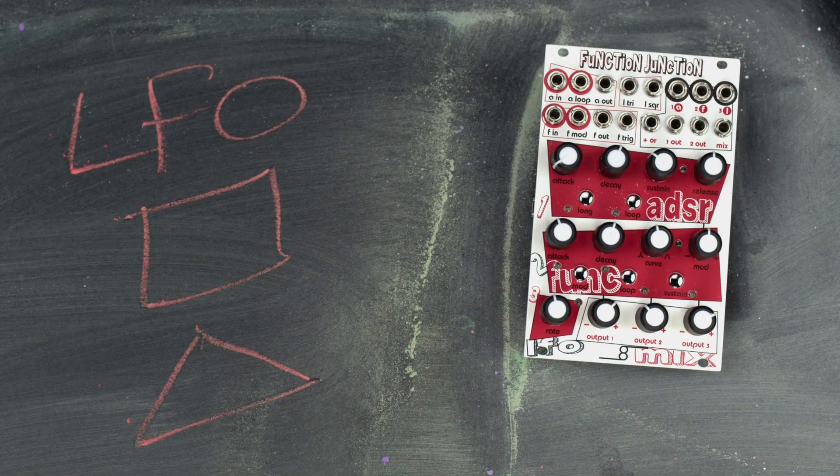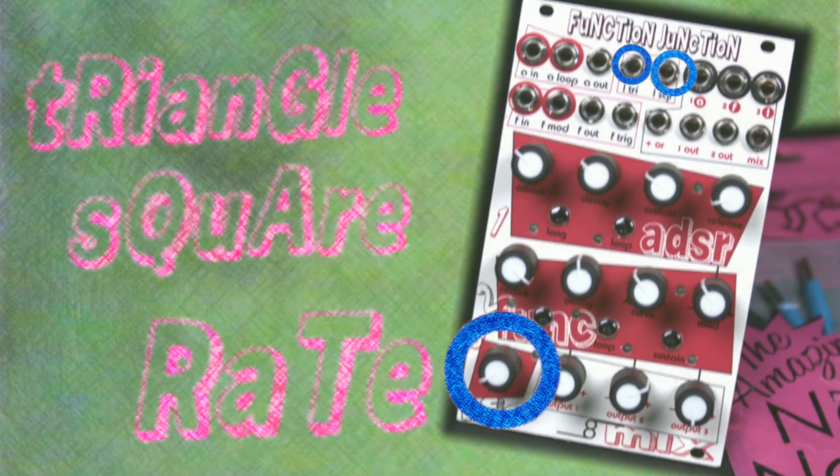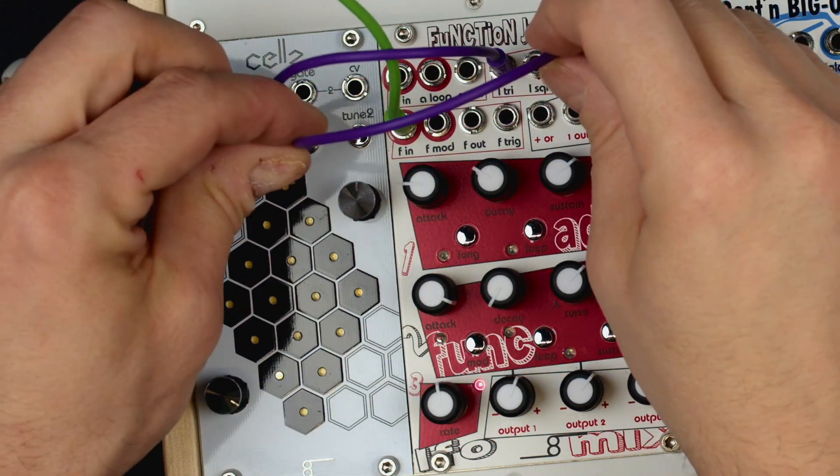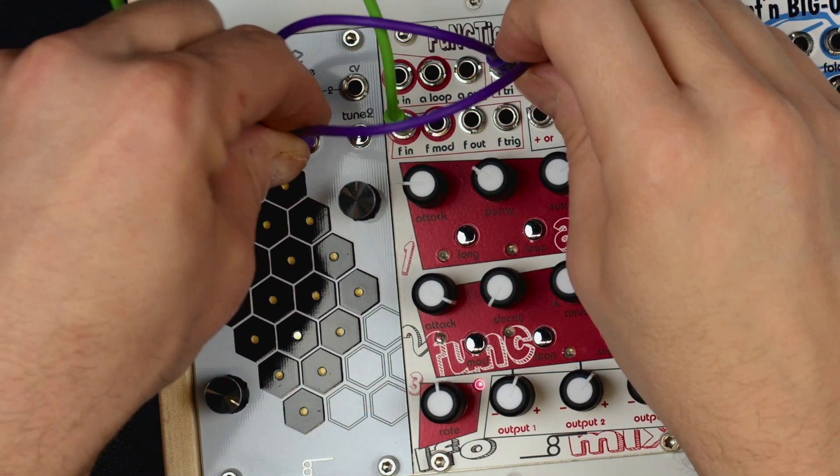You can never have too many LFOs. Straightforward to use and ready to modulate anything you want to wobble. One knob to control the rate and two outputs for triangle and square. Simple, but as with all the other utilities in this module, the LFO is perfect for modulating and triggering both external destinations as well as other sections of the Function Junction.